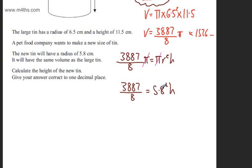At this stage, I'm simply going to divide both sides of this equation by 5.8 squared. So we will have 3887 over 8 divided by 5.8 squared and that will give us the height.